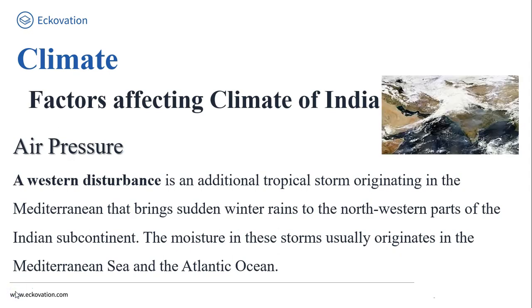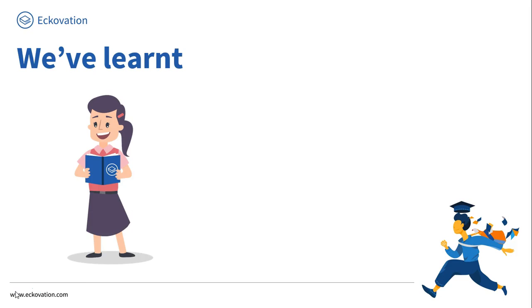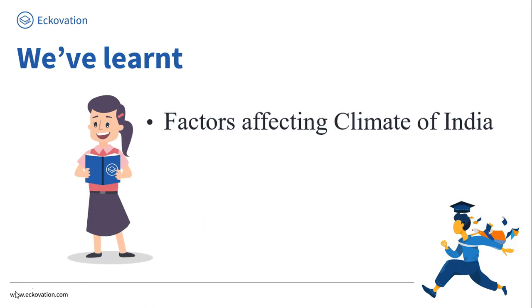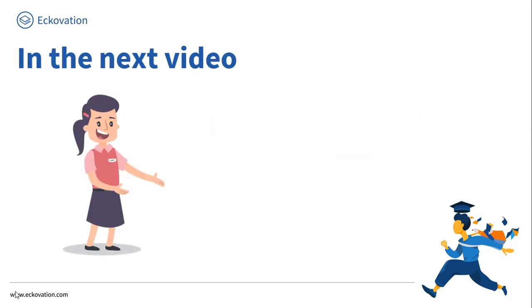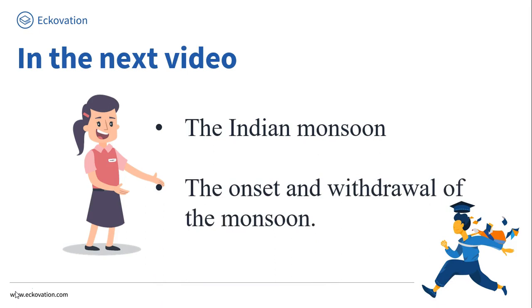In this video, we have learned about the factors affecting the climate of India. The reference is the Geography Class 9 textbook. In the next video, we will see the Indian monsoon and the onset and withdrawal of the monsoon. Till then, thank you.